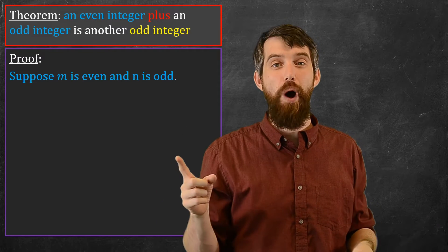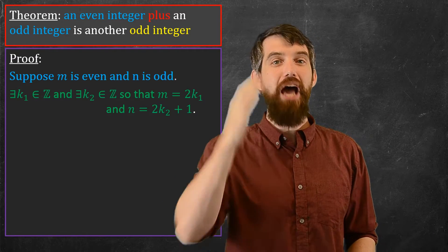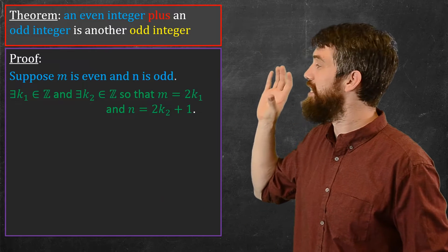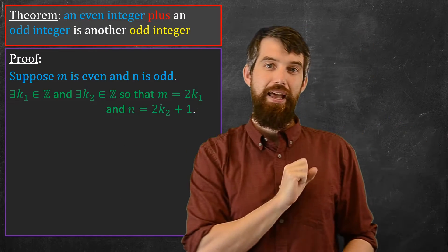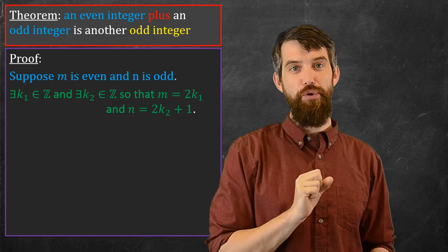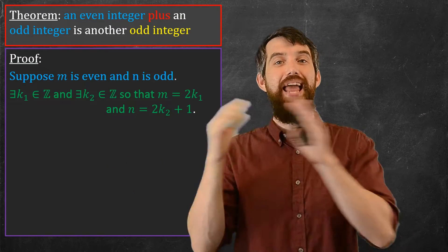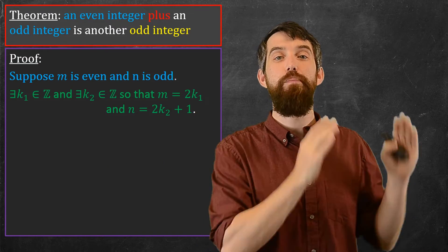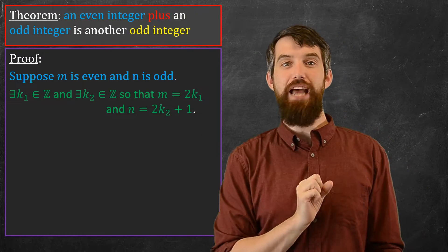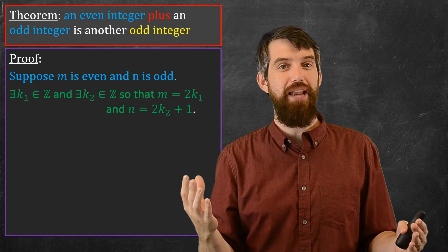I'm going to actually call them k1 and k2. And so when I apply my formal definition, it says there is an integer k1, and there is another integer k2, and that is what lets you write m as twice k1 and n as twice k2 plus 1. So this is the precise mathematical definitions of being even and odd.